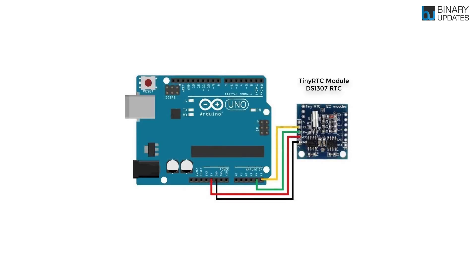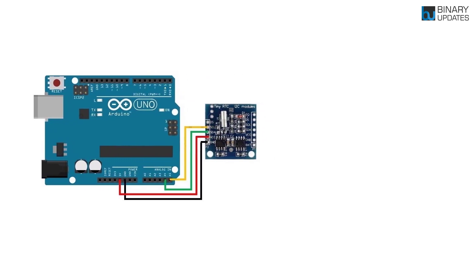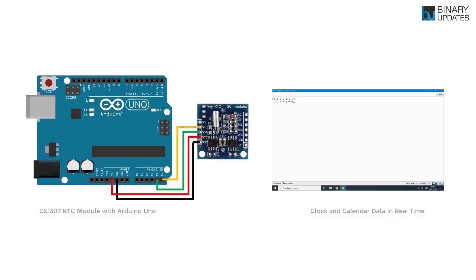Hello friends, welcome to another Arduino programming lesson. In this lesson we will read the RTC module DS1307 using Arduino Uno. We will read the clock parameters and the calendar data like seconds, minutes, hours, day, date, month, year and so on. We are implementing an I2C communication protocol to read the data from the RTC module.